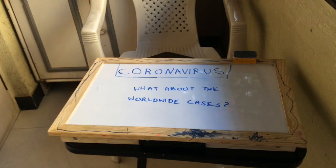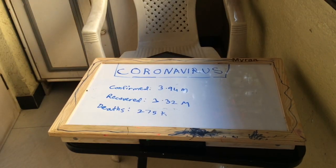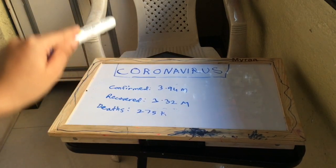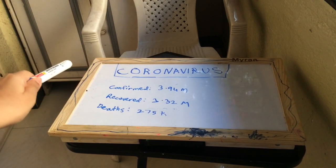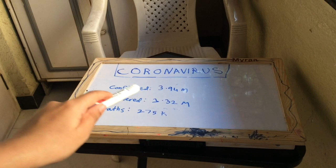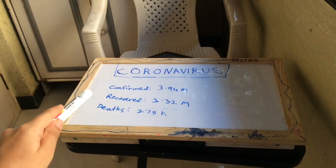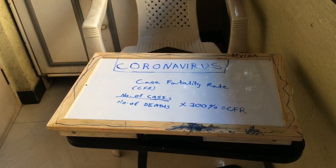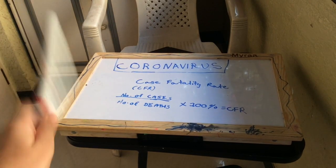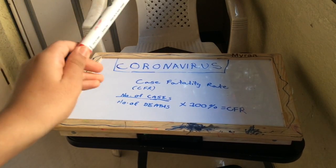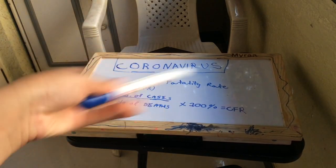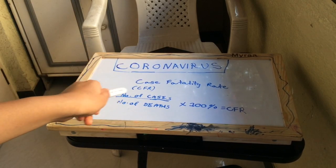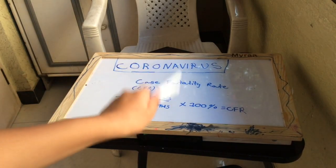The worldwide confirmed cases are 3.94 million, the recovered cases are 1.32 million, and the deaths are 275,000. To calculate the Case Fatality Rate (CFR) in a particular area or country, you just divide the number of deaths by the number of cases, multiply by 100%, and you'll get the CFR.